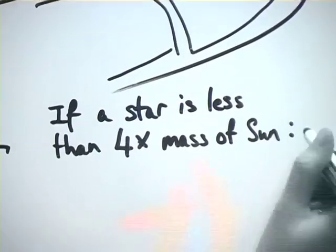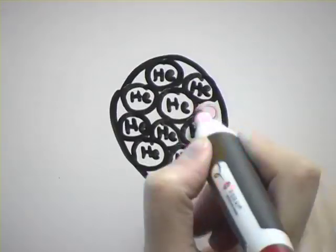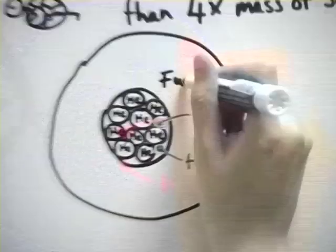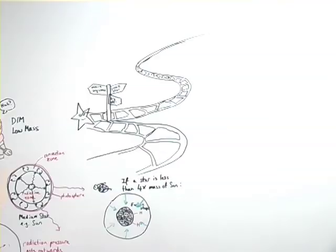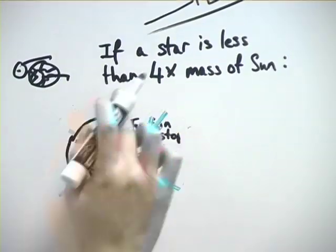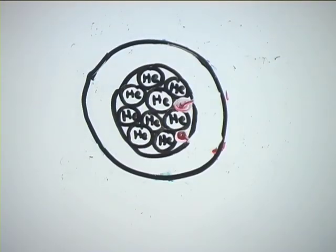Towards the end of the star's life, it begins to run out of hydrogen fuel to fuse together, so nuclear fusion in the core stops. This means that there is no longer anything generating an outward pressure to counteract the gravitational inward pull. This makes the outer layers of the star begin to collapse inwards again.